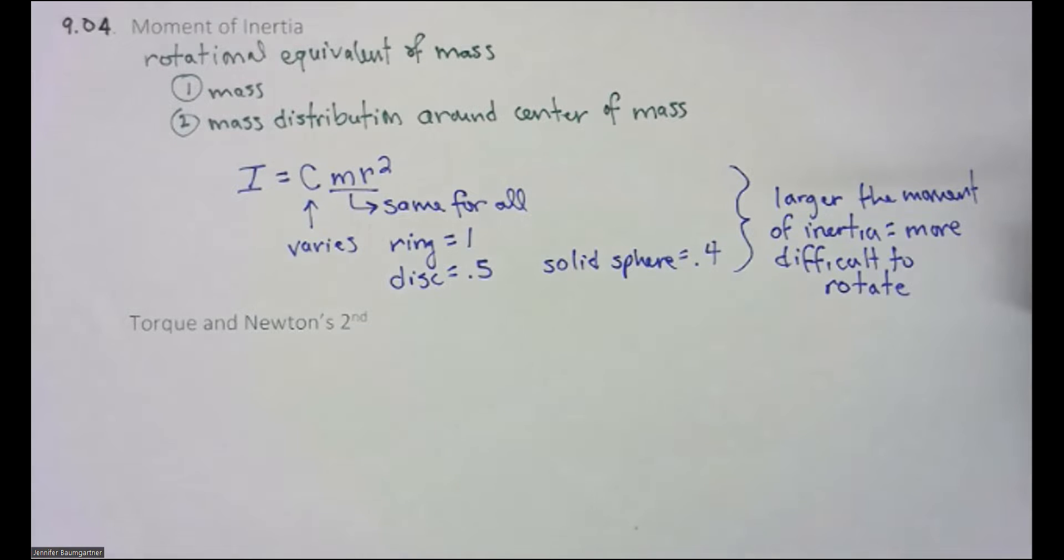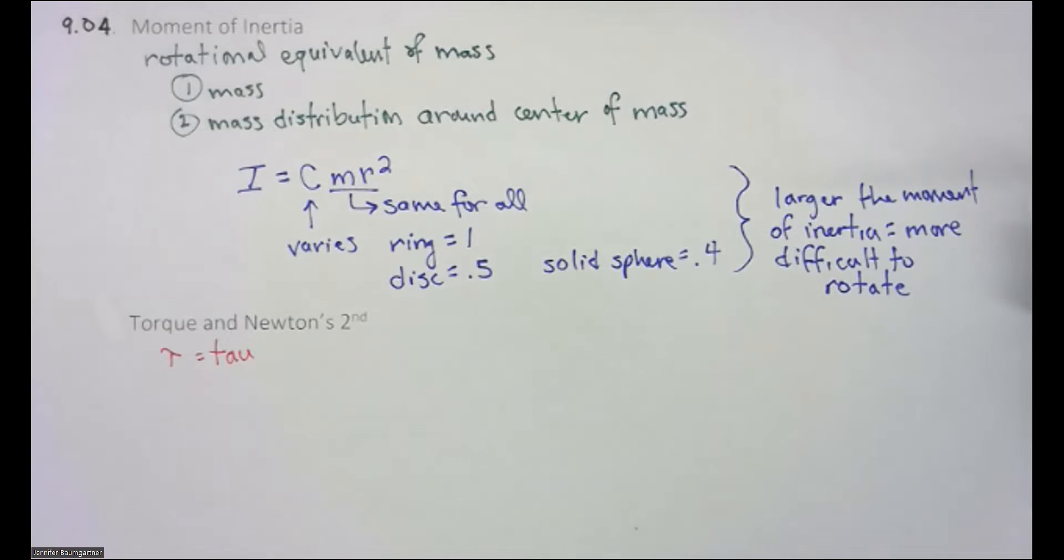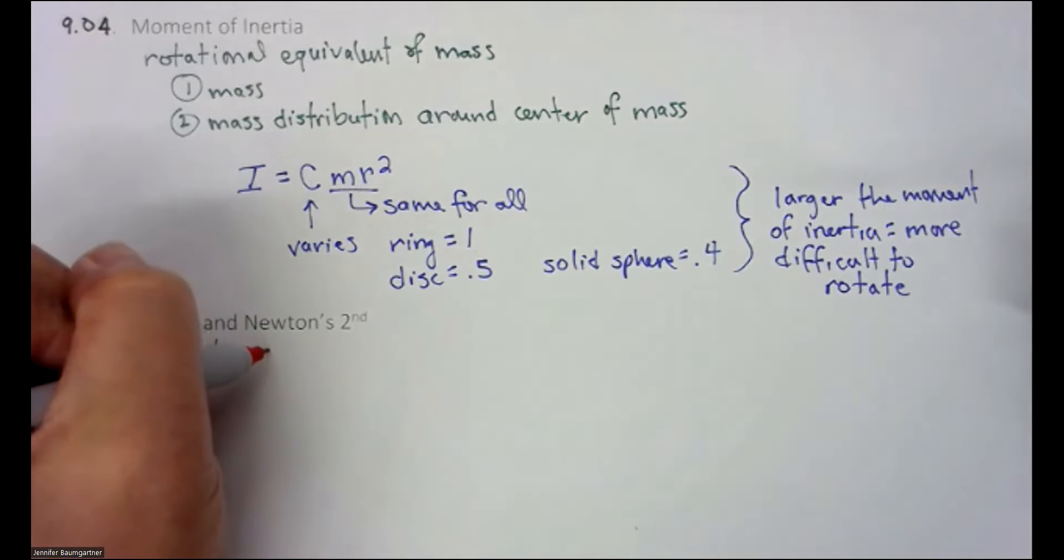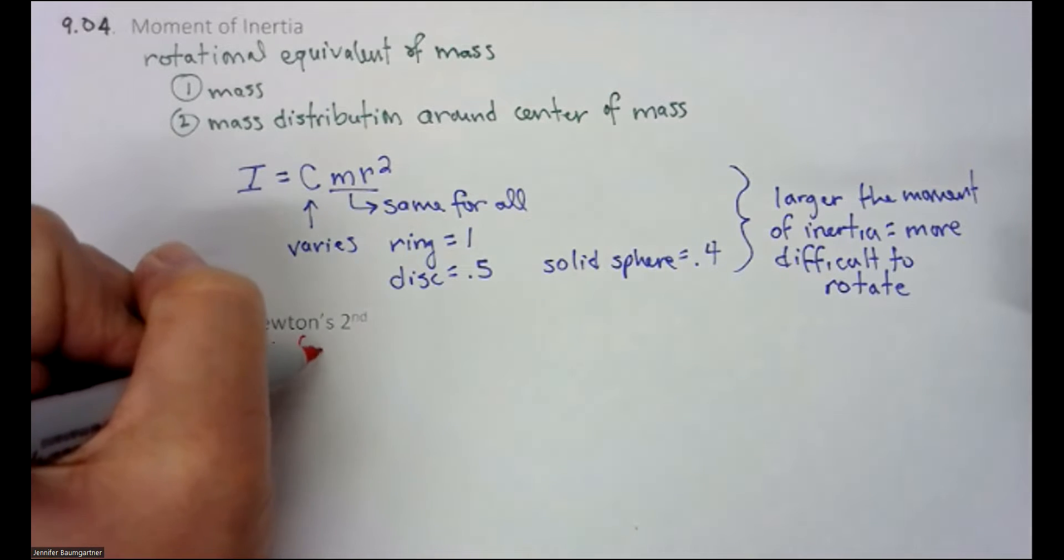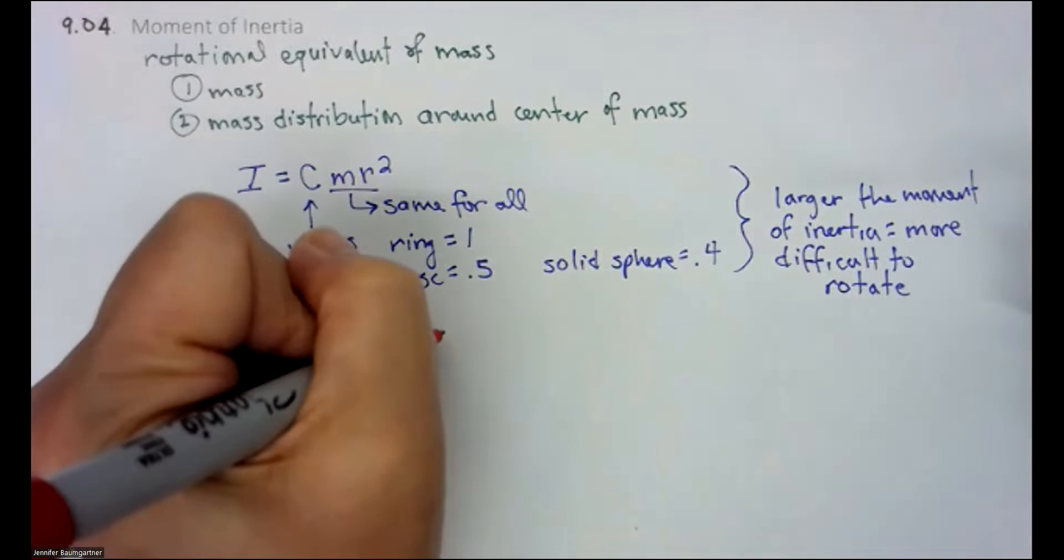So how does Newton's second law work when we're talking about something called torque? Let's first talk about the symbol for torque. So the symbol for torque is the Greek letter tau. This is tau. And that represents torque. And torque is defined as a force that causes rotation.